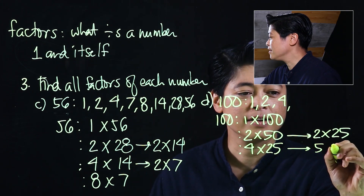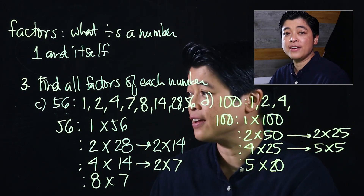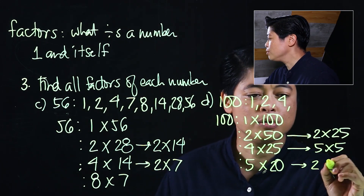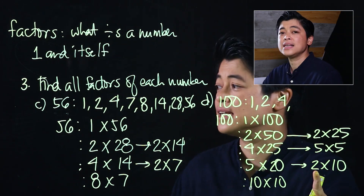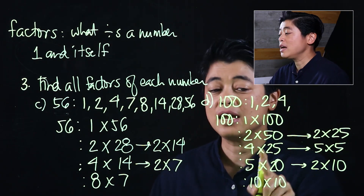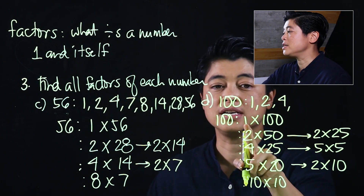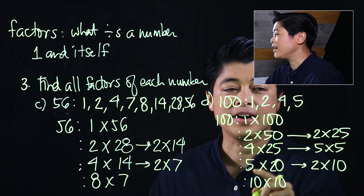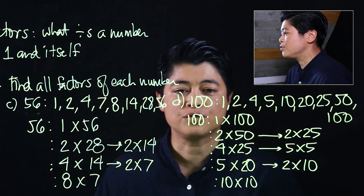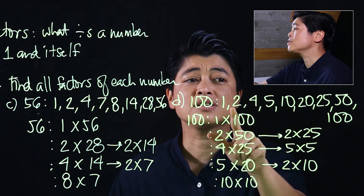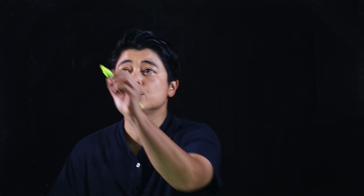Continuing: 25 is 5 times 5, so 4 times 5 is 20, keeping the other 5. Then 20 is 2 times 10, which means 5 times 2 is 10 times 10. Since we have the same number, we know we've covered all possible factors. Listing in order: 1, 2, 4, 5, 10, 20, 25, 50, and 100 — these are the factors of 100.